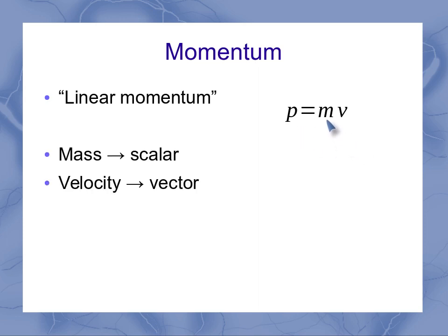In that equation, the mass is a scalar quantity, but velocity is really a vector. And when I multiply a scalar times a vector, I get a vector quantity, which means momentum should be a vector.